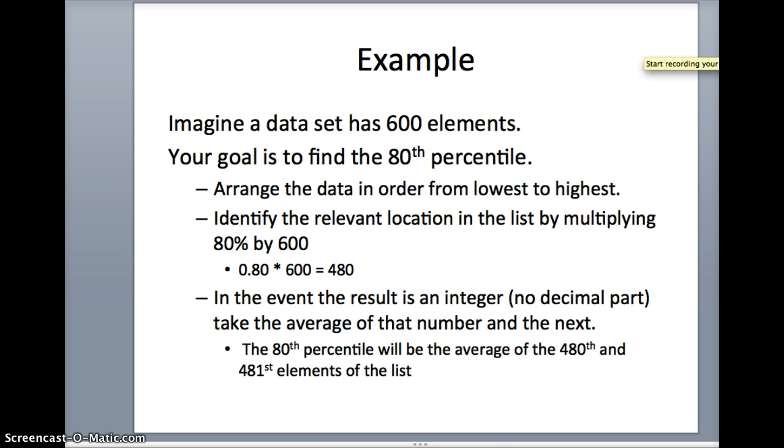This is different. This is a whole number, no decimal part. If we get a whole number, an integer, we've got to take the average of that location and the next location. So rather than just looking at the 480th, we take the average of the 480th and 481st. When we multiply the percentile by the number and get a whole number, we take the average of that location and the next one.